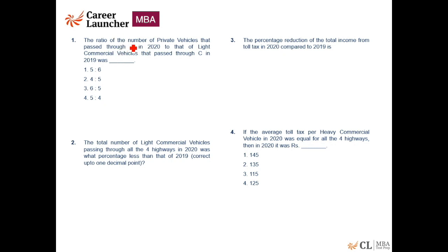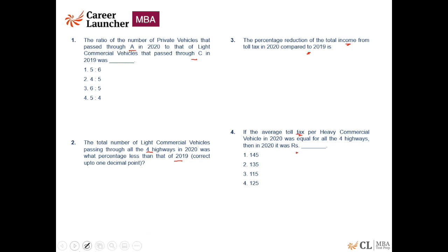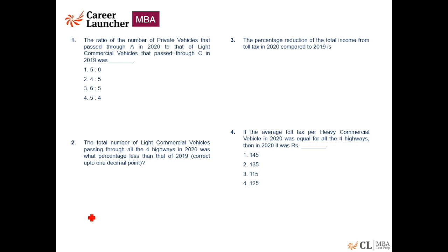Let's look at the questions to see whether we need to make a table. Question 1 asks about the ratio of private vehicles through A to LCVs through C — only two data points required. Question 2 is an arithmetic mean question. Question 3 is about percentage reduction in total income, possibly using the a + b + ab/100 formula. Question 4 is about average toll tax. I won't make a table; I'll go question by question.